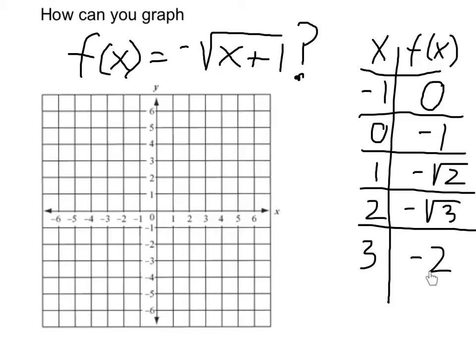Notice that this turns out to a whole number because 3 plus 1 is 4 and 4 is a perfect square, has a whole number square root. So the ones that come out to whole numbers are going to be easier to graph. Let's start there.